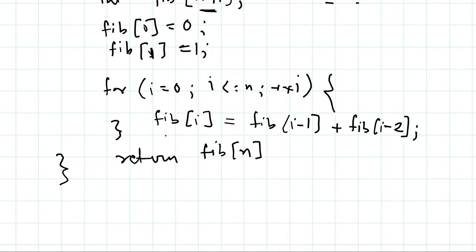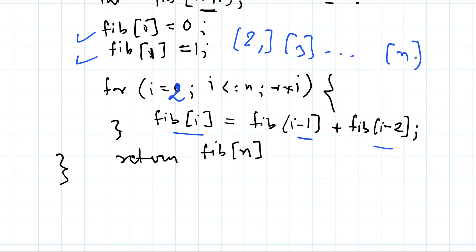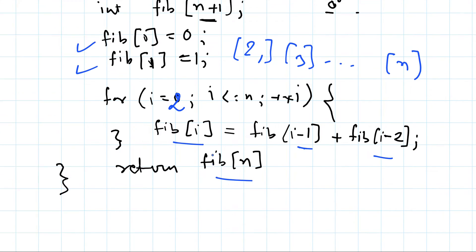Then we return the computed value Fib[n]. No problem will be solved twice because we have defined the base cases and start the loop from 2. For i=2 we need Fib[1] and Fib[0], which we already have. For i=3 we need Fib[2] and Fib[1], both already present in the array. Every subproblem is solved exactly once, so this should be fast.